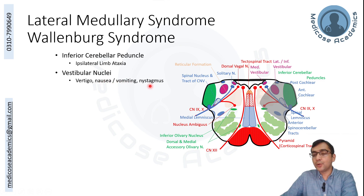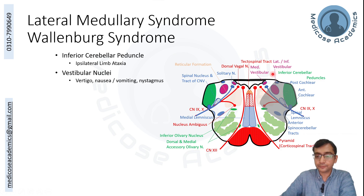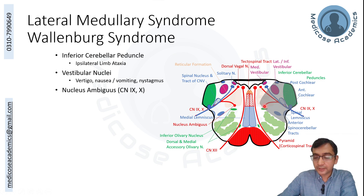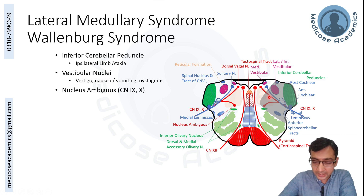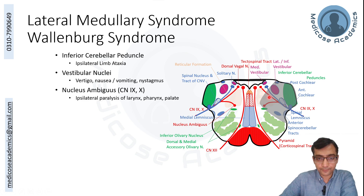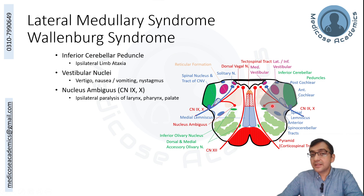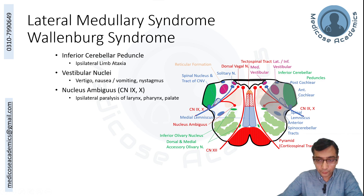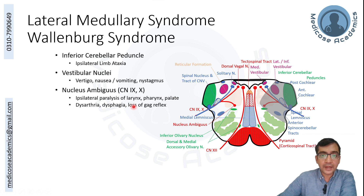Due to vestibular involvement there will also be nausea, vomiting-like feeling, and nystagmus — the to-and-fro pendular movements of the eye. The nucleus ambiguus supplies the muscular component of the glossopharyngeal nerve, vagus, and cranial part of the accessory nerve, which supply the palate, pharynx, and larynx. Larynx involvement causes dysphonia and dysarthria; pharynx involvement causes dysphagia, nasal tone of voice, nasal regurgitation, and loss of gag reflex.